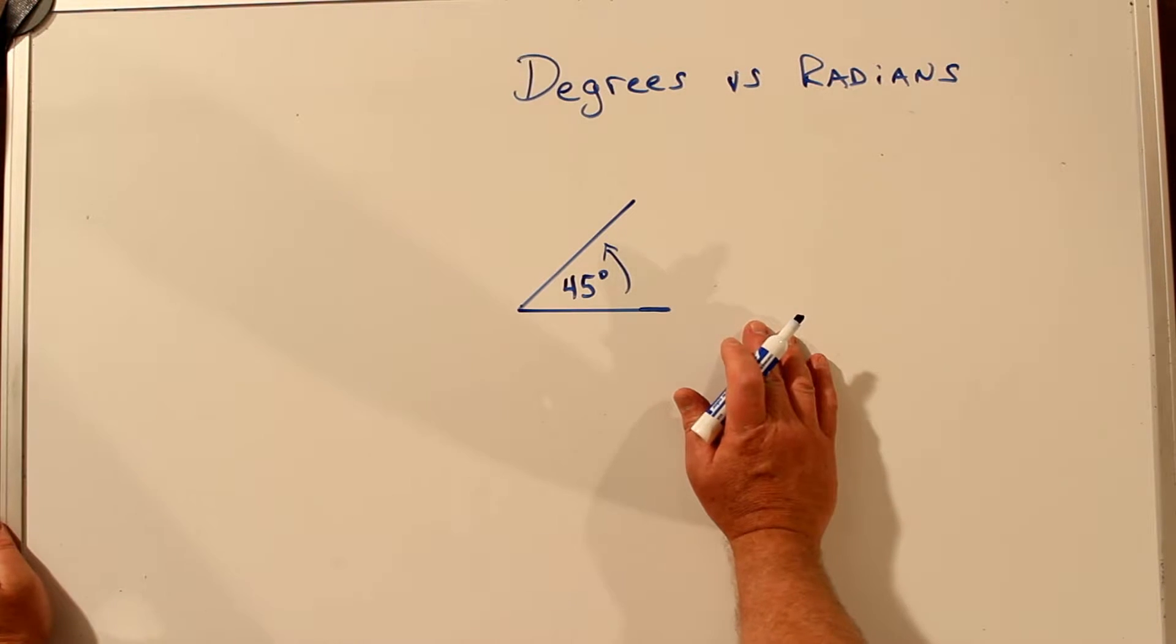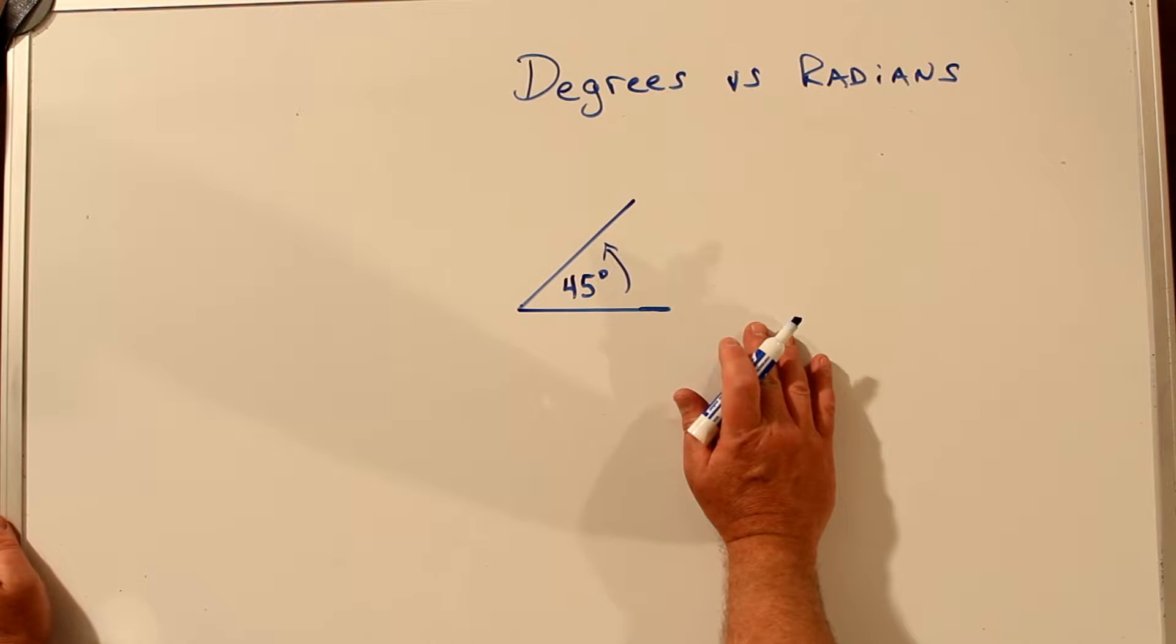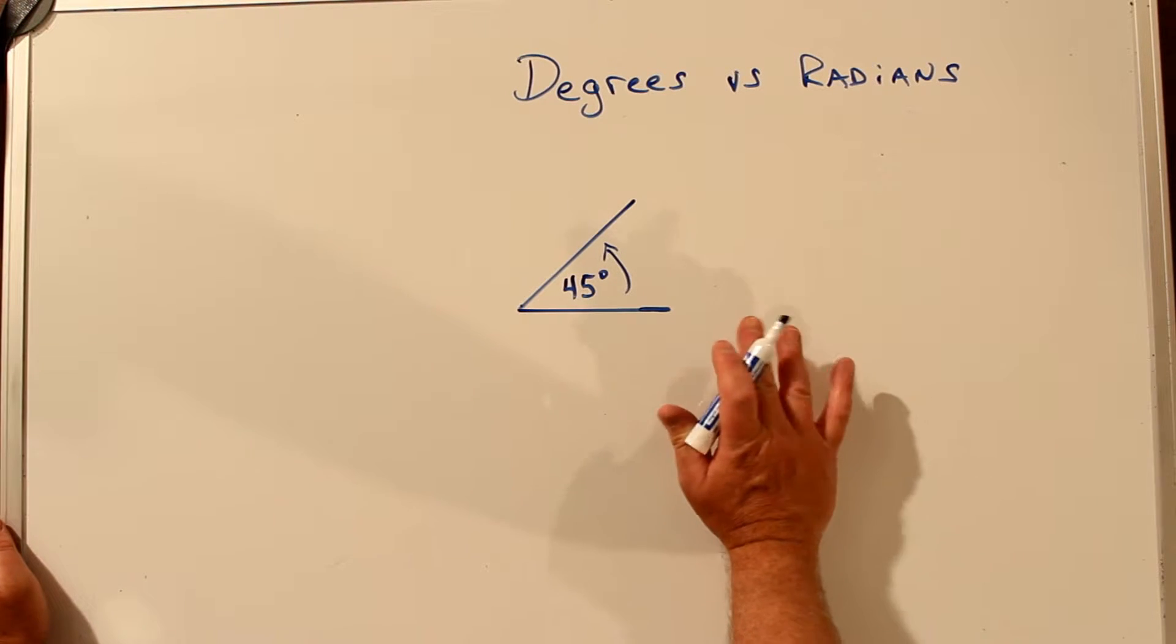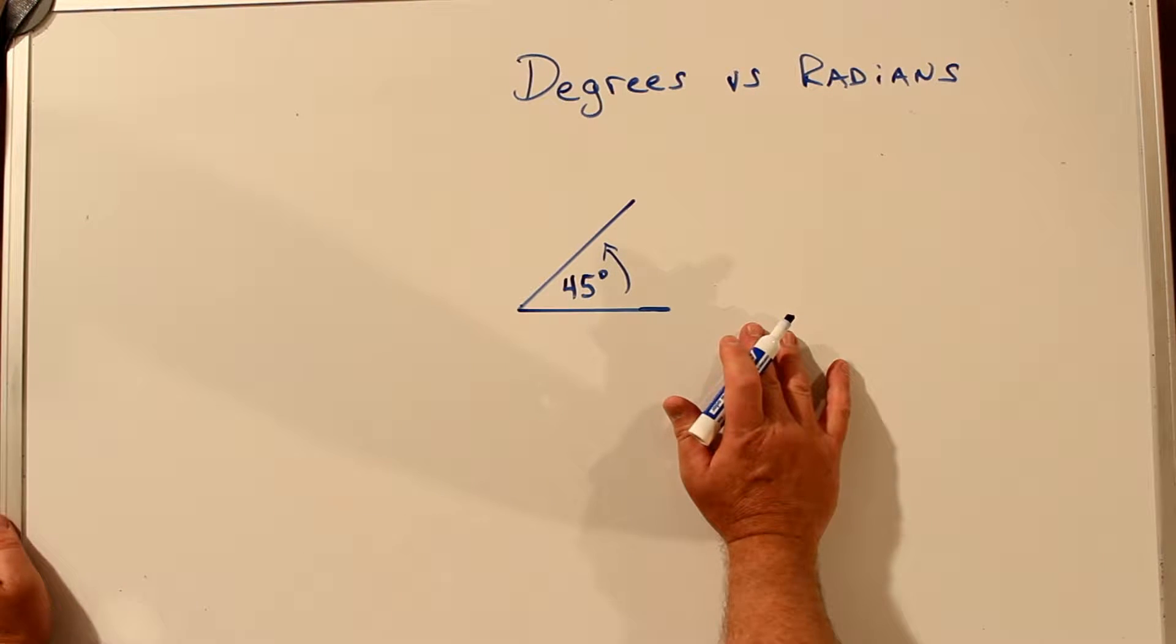Let's talk about degrees and radians, what the definitions are, where they came from, which is better, which is worse, and which situations.